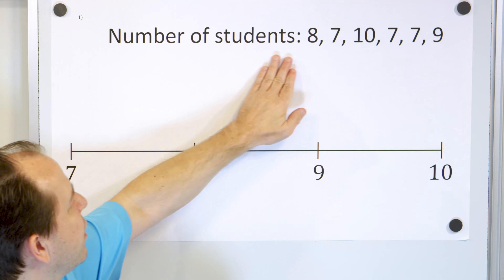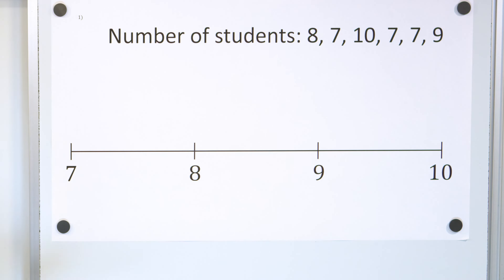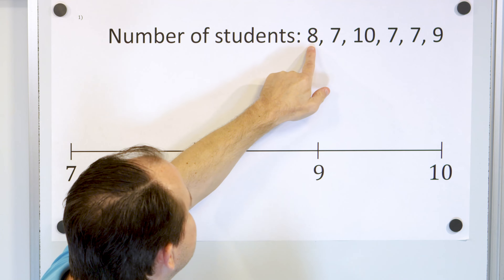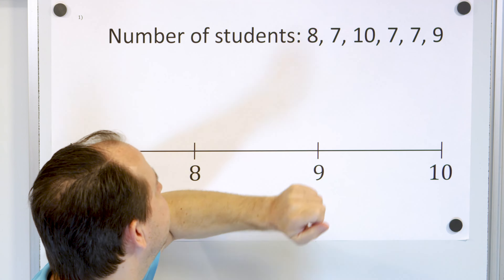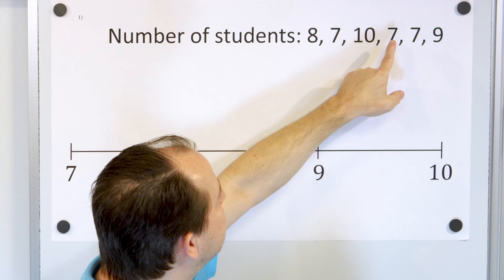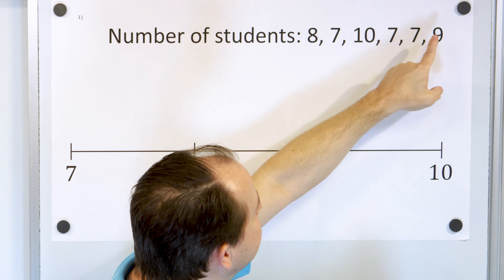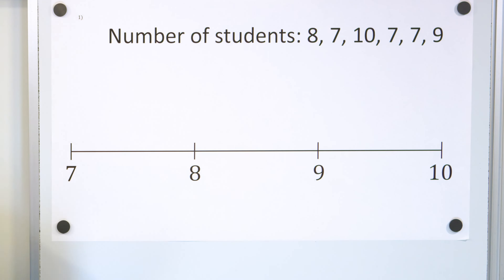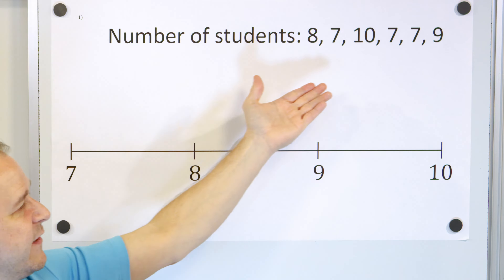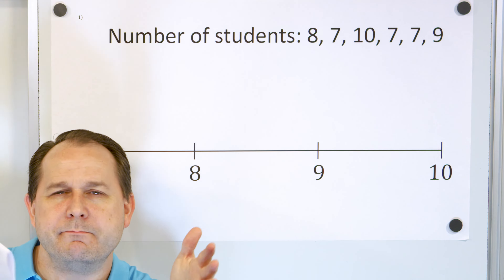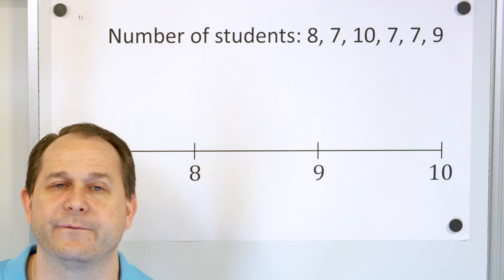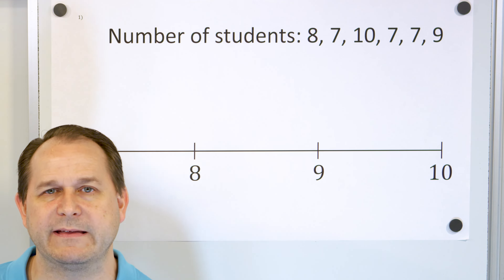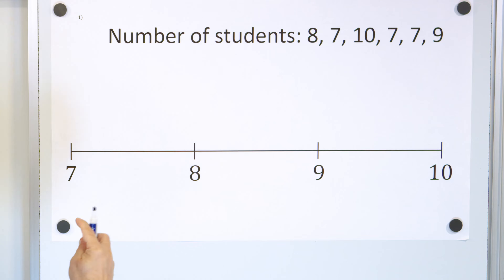Let's take a look at our first problem: number of students. This is basically the number of students in different classrooms. Classroom number one has 8 students, another class has 7 students, another has 10 students, another has 7 students, 7 students, and finally the sixth class has 9 students. How do we look at these numbers and figure out what a good middle value is? Well, there are different flavors of doing it. Let's talk about the mean first.